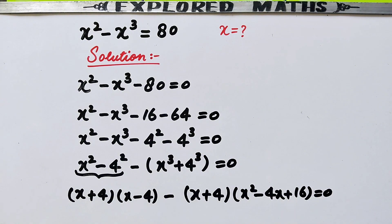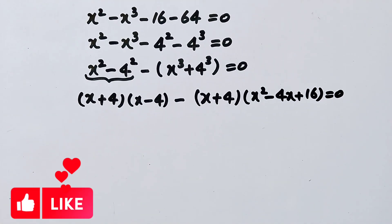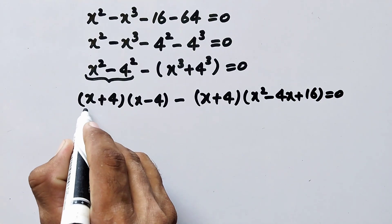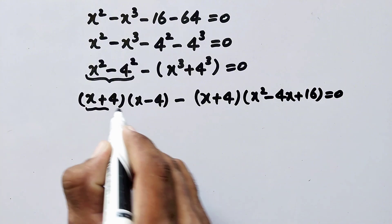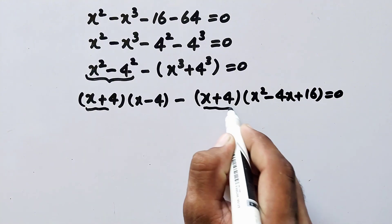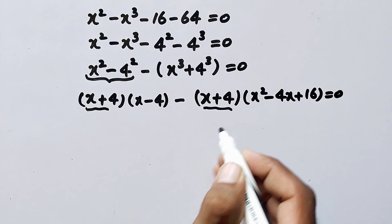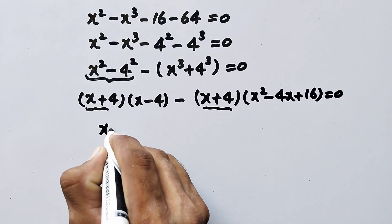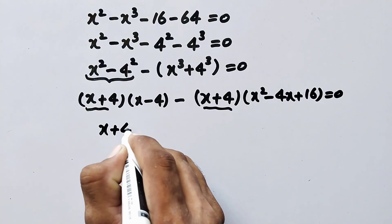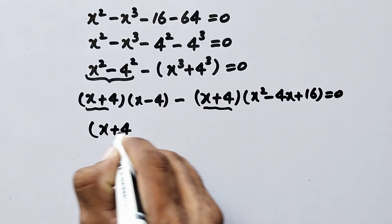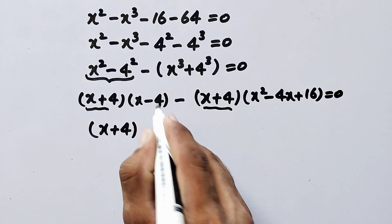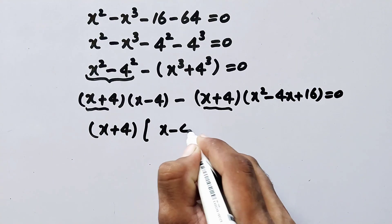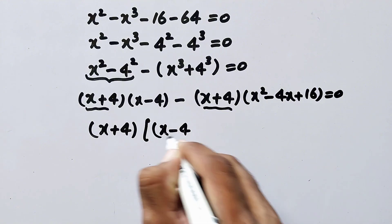So now we can see that the factor x plus 4 is repeating in both terms, so we will take it out as a common factor. Taking x plus 4 common, here left will be x minus 4 minus x squared minus 4x plus 16, equal to zero.